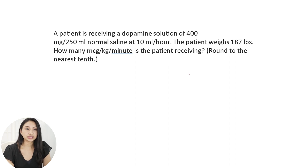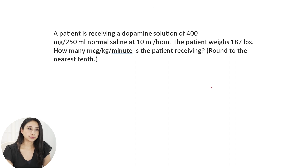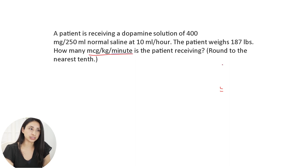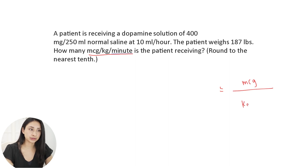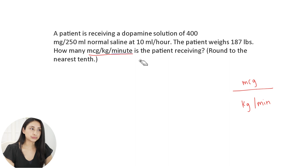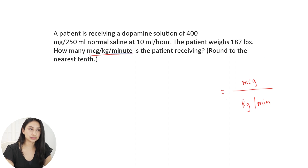To solve this, I'm going to use the dimensional analysis method. I'll write equals and then what they're asking: micrograms per kilogram per minute. I'm going to look back at the question and find information that gives me either micrograms, kilograms, or minutes.